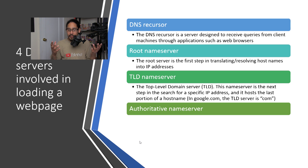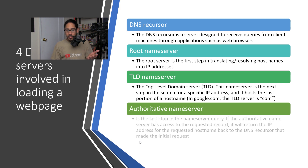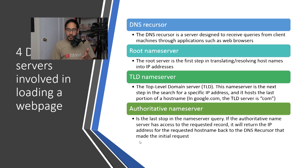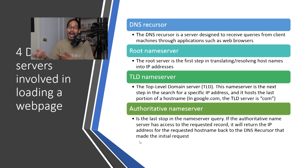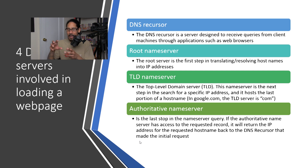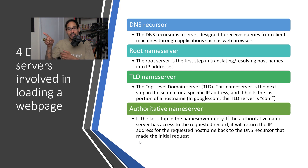The last step is the authoritative name server. If the authoritative name server has access to the requested record, it will return the IP address for the requested hostname back to the DNS recursor that made the initial request. So basically, if the record exists inside the phone book, it shoots it back to the DNS recursor — which is you.